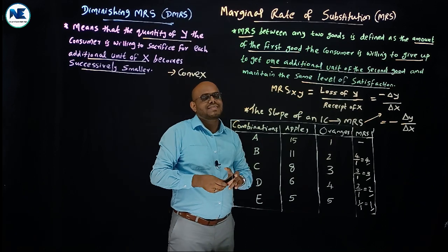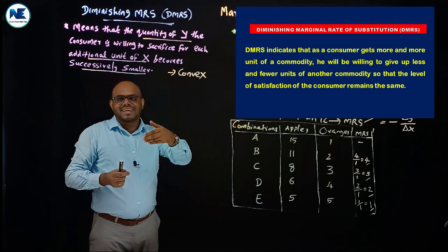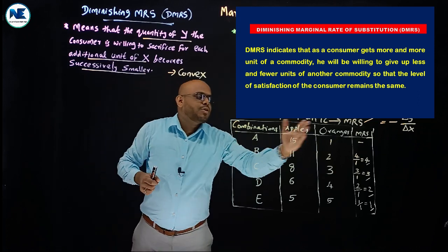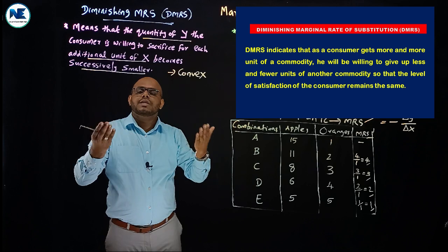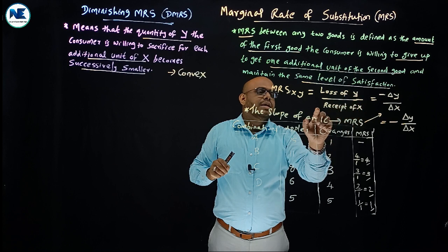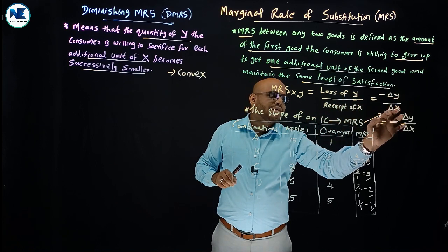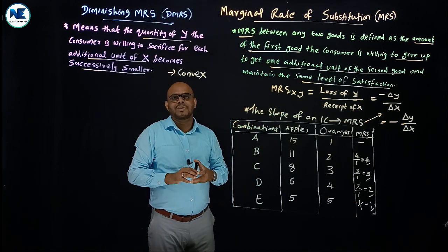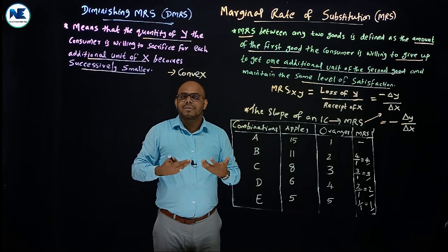This is the diminishing marginal rate of substitution. To find the marginal rate of substitution, the formula is: loss of Y divided by the gain of X — that is, change in Y divided by change in X. Now we can explain diminishing marginal rate of substitution with a diagram.